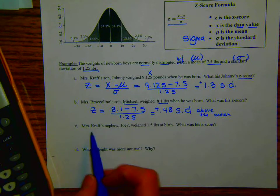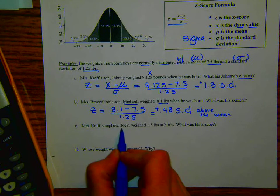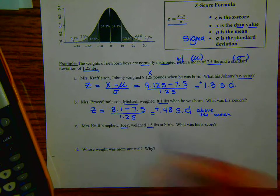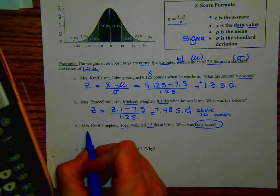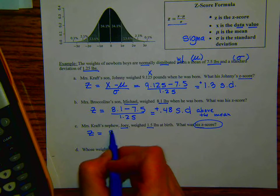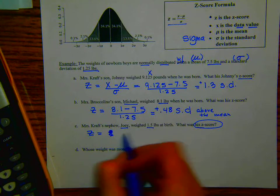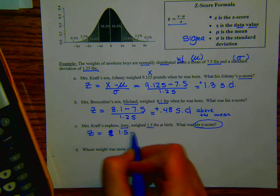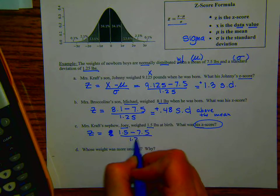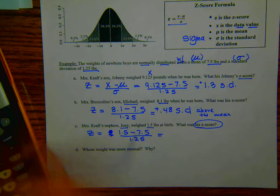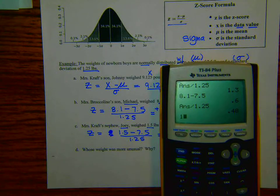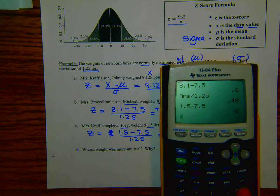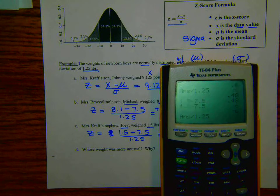All right. Let's do another one. So Mrs. Craft's nephew, Joey, weighed 1.5 pounds at birth. What was his z-score? One more time. Z equals his x, 1.5 minus 7.5 divided by 1.25. So getting out the calculator again. So we have 1.5 minus 7.5, divided by 1.25.